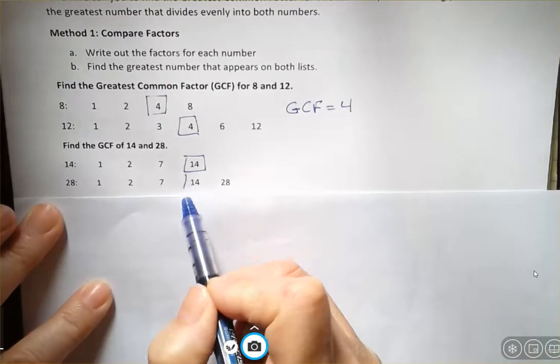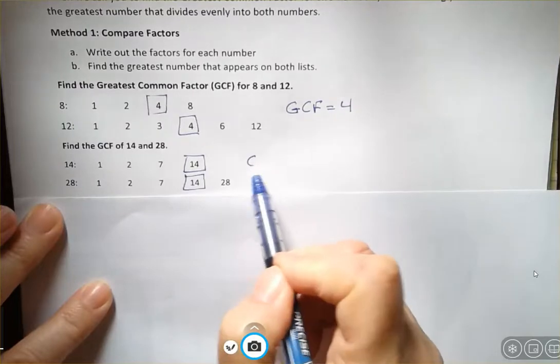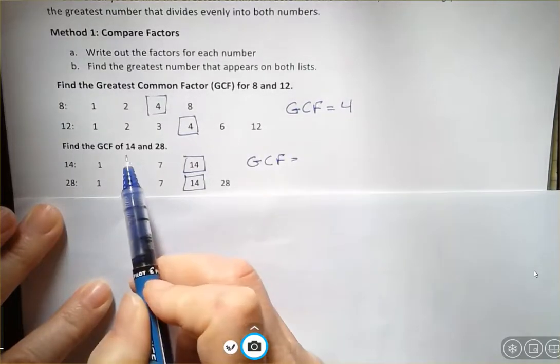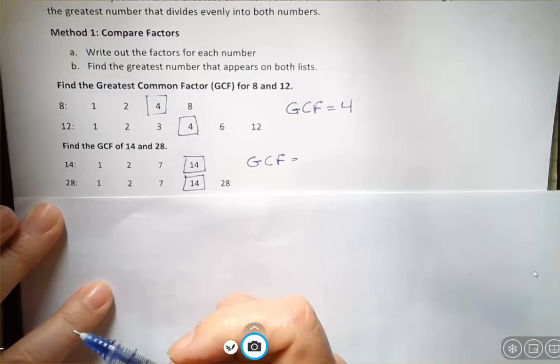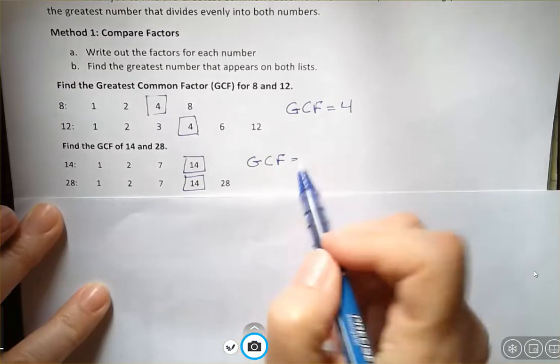So sometimes you might be able to look at the question and know the answer without having to do any of that. If you can say, 14 goes into 28, so that's the greatest common factor that they share.